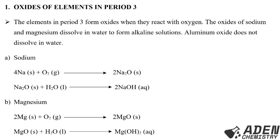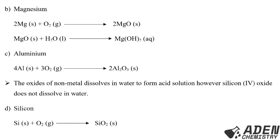Magnesium solid reacts with oxygen gas giving us magnesium oxide, then when magnesium oxide is added to water we get magnesium hydroxide solution. Next, aluminium solid reacts with oxygen gas to form aluminium oxide, and remember we said aluminium oxide does not dissolve in water.